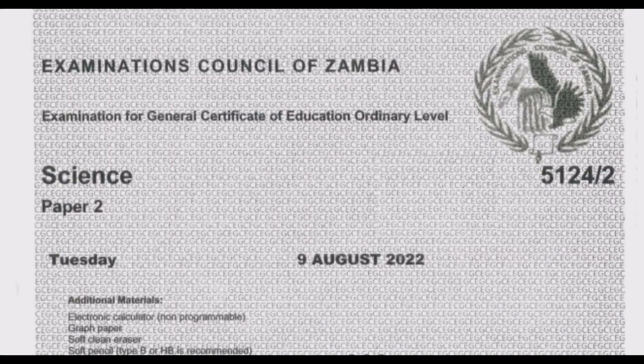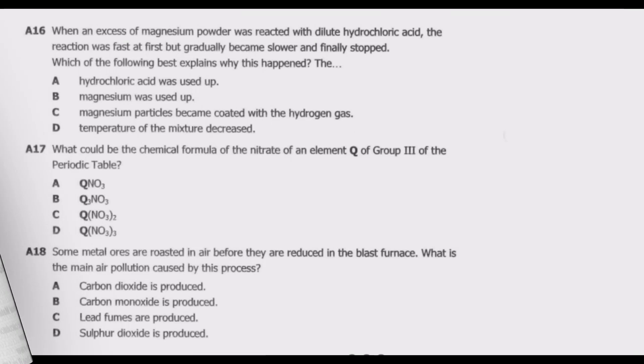Welcome viewers to another episode on ASUG 12 exams. This episode is a continuation of Section A of the August 2022 Science Paper 2, which is the standard O-level chemistry. In the first three episodes we covered questions 1 through 15. This episode we are going to focus on question A16 through 20. Let us look at question A16.